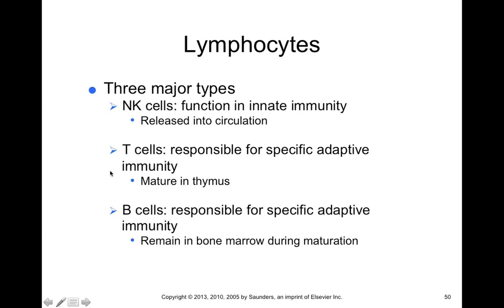T cells mature in the thymus, and B cells mature in bone marrow. If someone has damage to the thymus or bone marrow, it can affect the development of these cells.